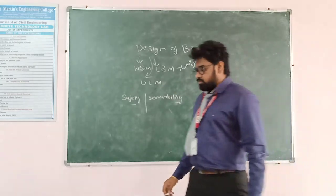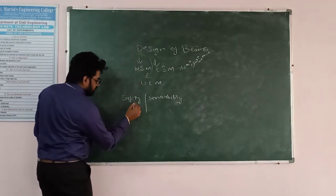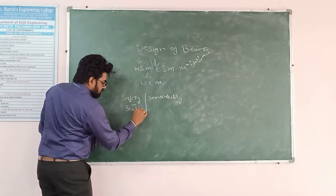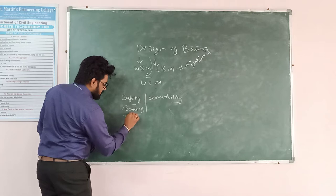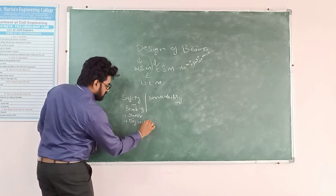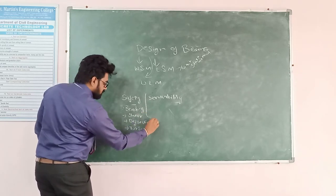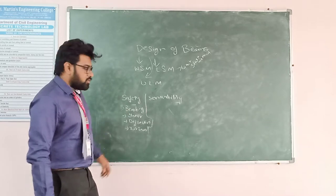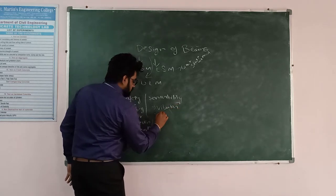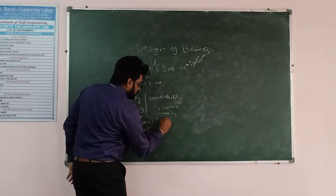In the Limit State Method there are failure modes to satisfy. First is Failure in Safety, which includes: Bending Failure, Shear Failure, Deflection Failure, and Torsion Failure. The structure should resist these four components. For serviceability: Vibration, Cracking, and Secondary Effects are the criteria to be satisfied.